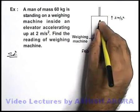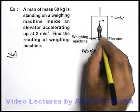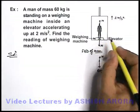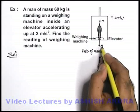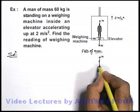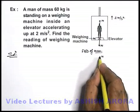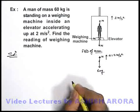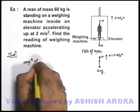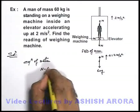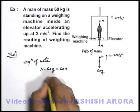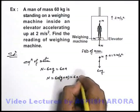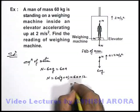The man experiences a normal reaction N in the upward direction. Simultaneously he pushes the weighing machine downward with the same normal reaction, which the machine measures. The man is going up with an acceleration of 2 meters per second squared. Writing the equation of motion: N − 60g = 60 × ay. So N = 60(g + ay) = 60 × (10 + 2) = 60 × 12 = 720 newtons.